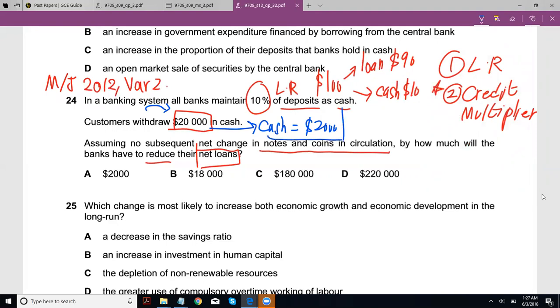And the idea is the rest is loaned out. So loans is $18,000.